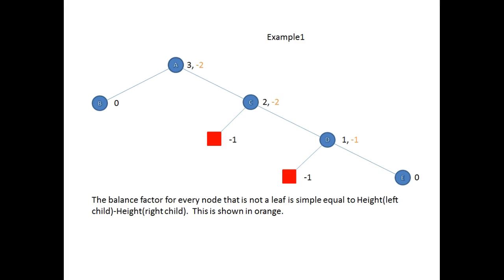To start balancing this tree we need to put in some dummy nodes to ensure that every node that's not a leaf has two children. When we put the dummy nodes in, the height by definition is equal to minus one. Here we've got the dummy leaves in place.